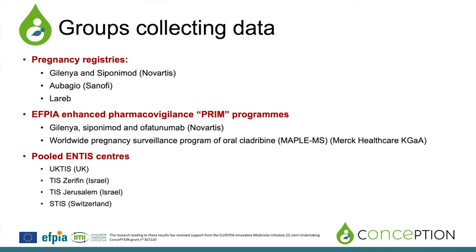Here are the collaborators of our project. The Pregnancy Registries, composed of Novartis, Sanofi Firms and Lareb, which is a public pregnancy registry in the Netherlands. The Enhanced Pharmacovigilance Programs, called PRIM, for Pregnancy Outcomes Intensive Monitoring, which are Enhanced Pregnancy Registries from Novartis and Merck. And the ENTIS Centers — ENTIS is a European Network of Teratogen Information Services. Basically, these are institutions patients and healthcare providers can call to have an assessment of a drug used or to report a drug used during pregnancy. We will have four centers: one from the UK, two from Israel, and one from Switzerland.